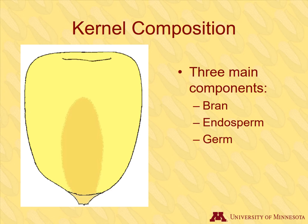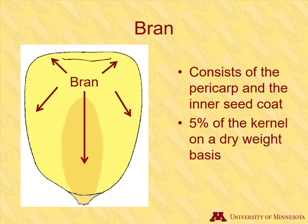In addition to the three main components, there is a little piece at the bottom called a tip cap. It is 1% of the total kernel and not economically significant. The bran is the outside of the kernel, not including the tip cap. The bran is about 5% of the kernel's weight. It consists of the pericarp and the inner seed coat. The pericarp is the yellow part that you can see, and it protects the seed. The bran provides fiber and other nutrients.